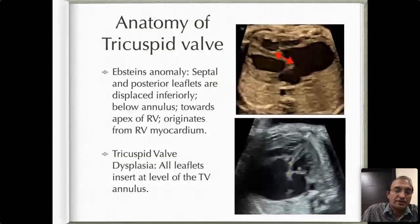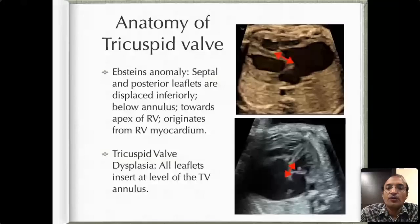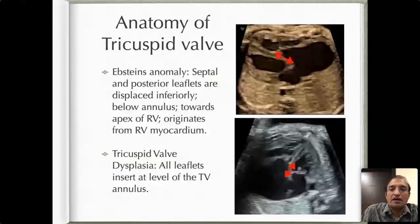As Ebstein's becomes more and more severe, the displacement also becomes greater, with the tricuspid valve inserting at a very low level. This results in a very specific entity I'll show in a couple of slides. So that is the difference between a dysplastic tricuspid valve and Ebstein's anomaly.